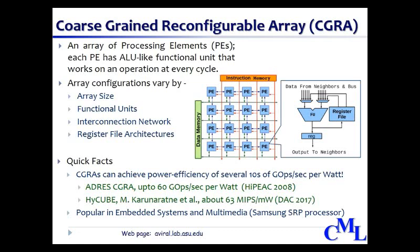CGRA is simply an array of processing elements, or PEs, interconnected by a 2D network. Each PE consists of an ALU-like functional unit and a register file, or RF. At every cycle, instructions are issued to these PEs from the instruction memory. The PE gets inputs from neighboring PEs, its own registers, and executes some operation, then writes the result into the RF and to the output register from which neighboring PEs may read the result in the next cycle.